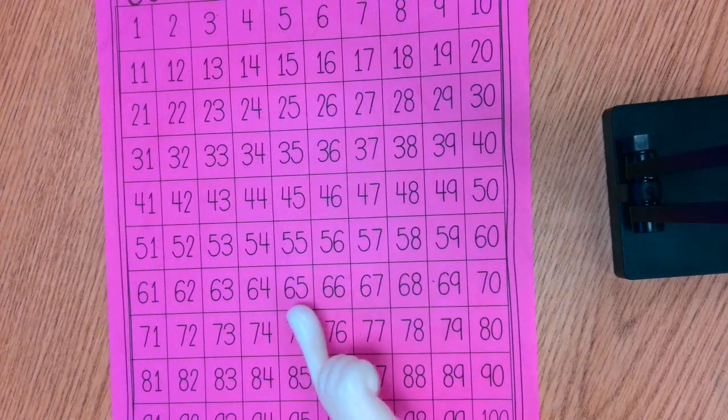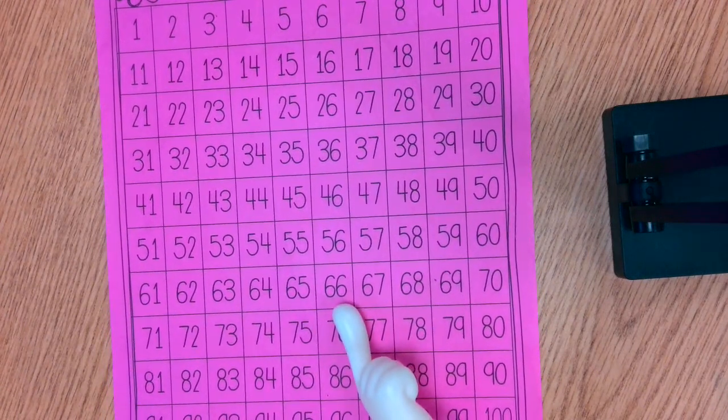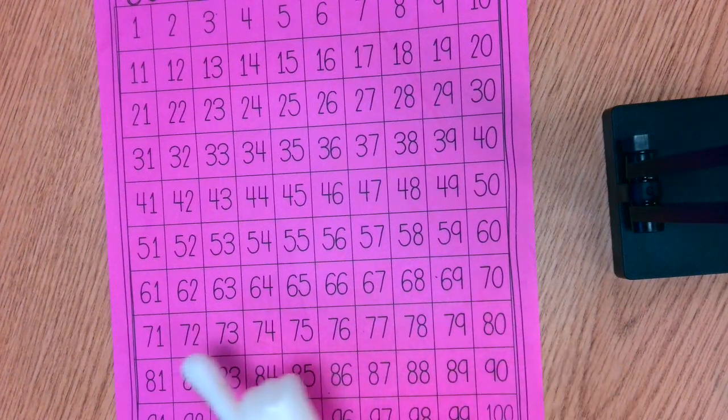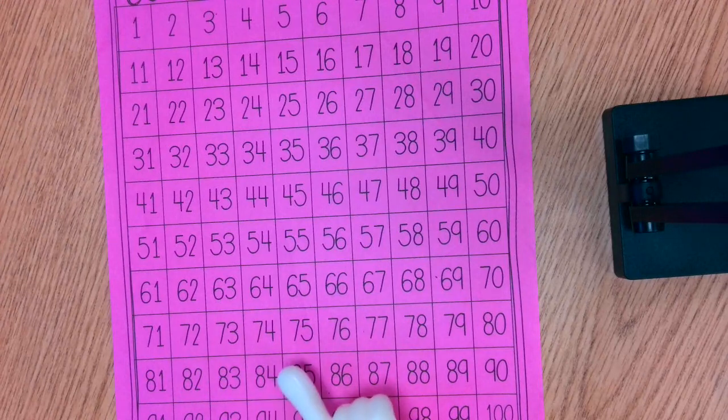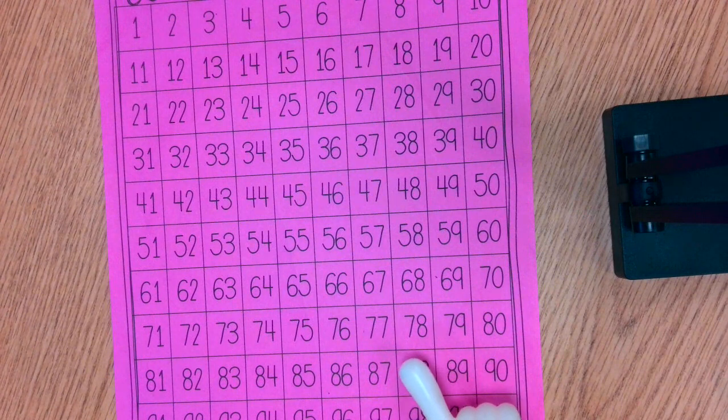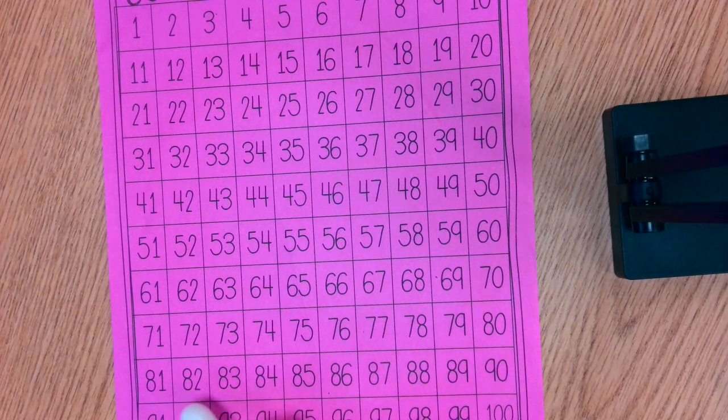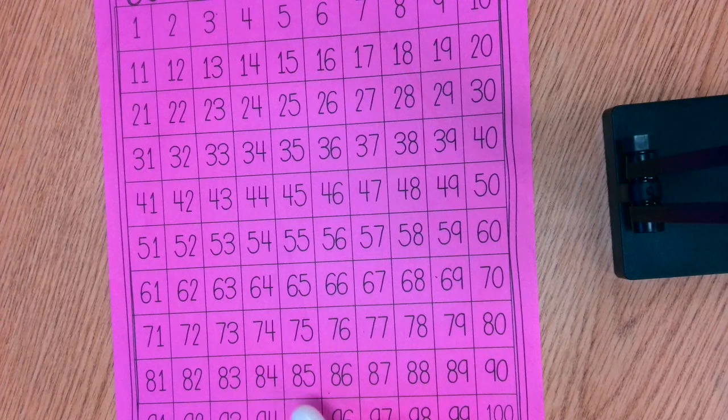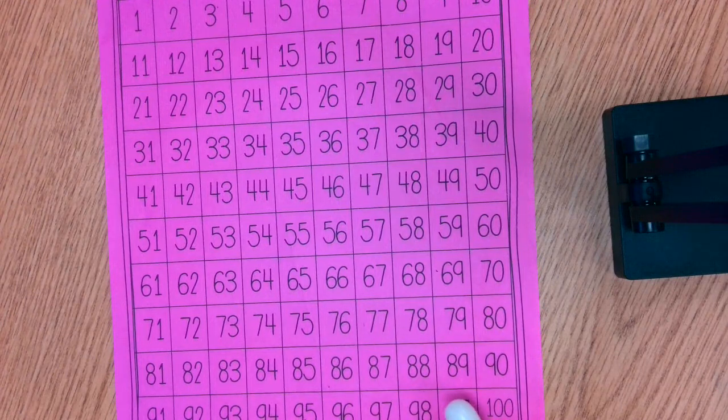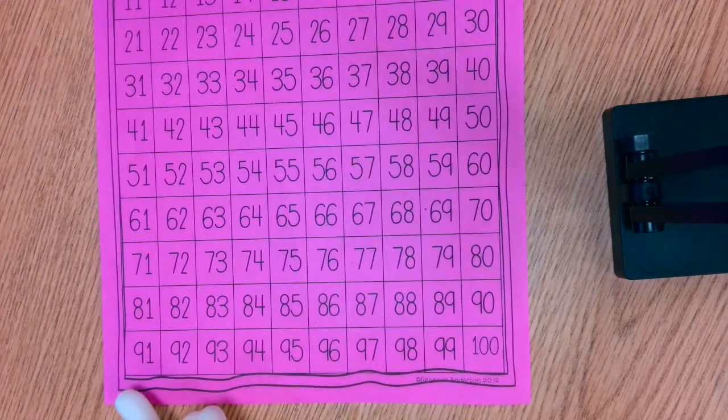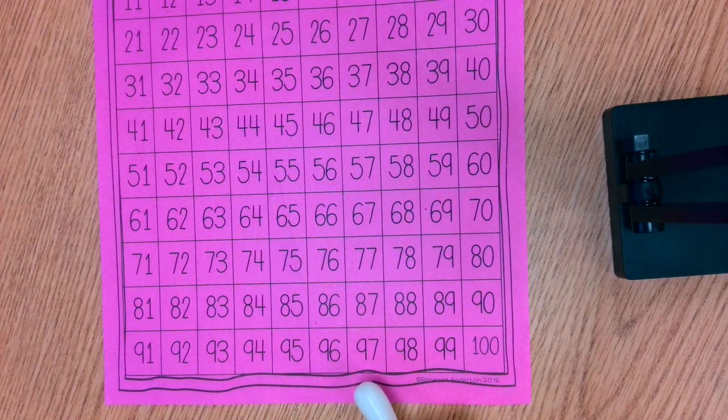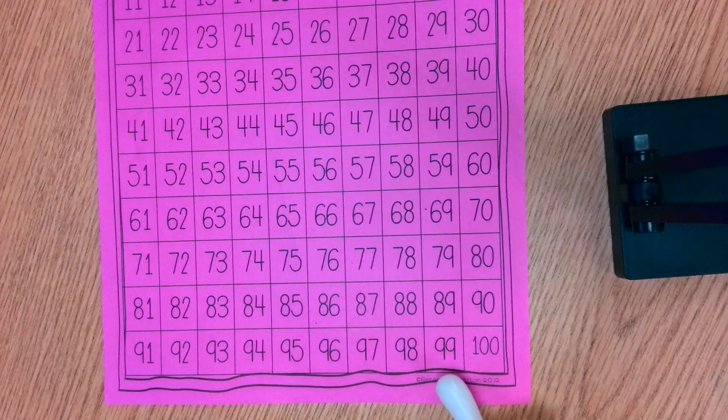Here we go: 65, 66, 67, 68, 69, 70, 71, 72, 73, 74, 75, 76, 77, 78, 79, 80, 81, 82, 83, 84, 85, 86, 87, 88, 89, 90, 91, 92, 93, 94, 95, 96, 97, 98, 99, 100.